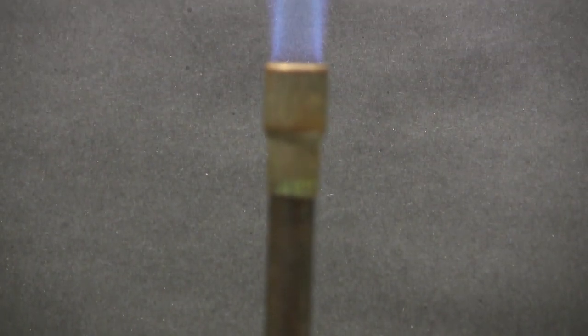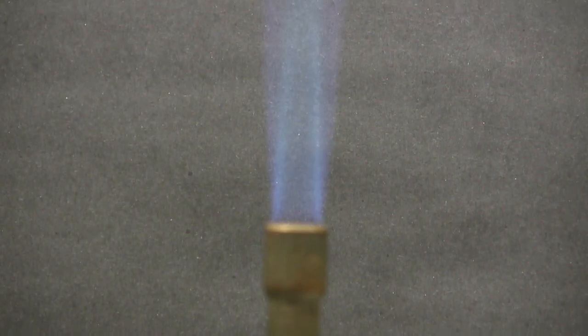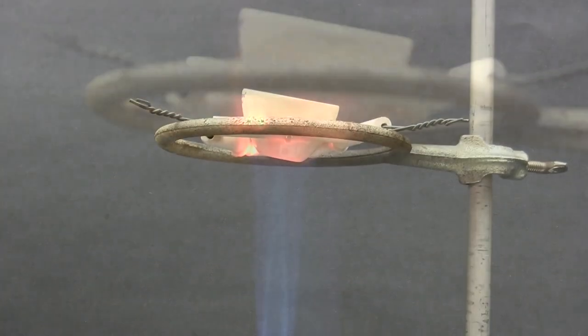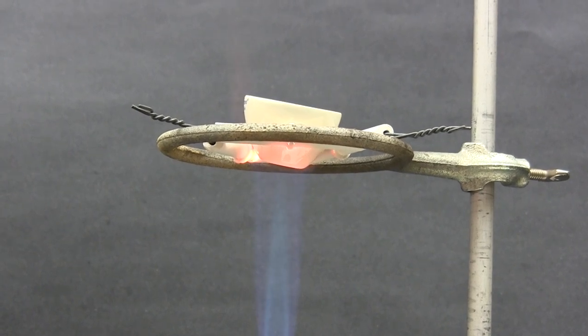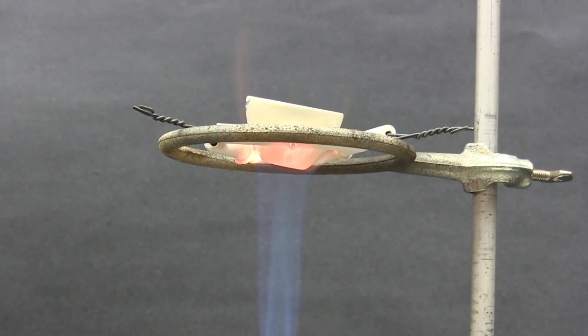And here we see a porcelain crucible being heated in the Bunsen flame. Again note how we place the item to be heated at the tip of the inner blue cone, the hottest part of the flame, and see how the underside of the crucible is red hot, indicating that it's being heated properly.